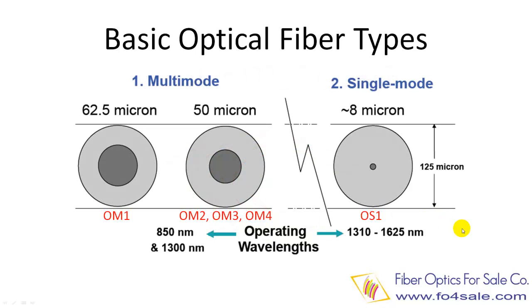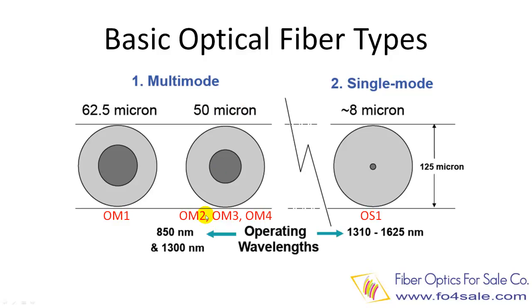Before we jump into OM4 fiber directly, let's take a quick overview of the basic fiber types. Optical fiber can be divided into two groups: multimode fiber and single-mode fiber. There are two sizes of multimode fiber — multimode fiber with a 62.5 micrometer diameter core and multimode fibers with a 50 micrometer core. The 62.5 micron fiber is called OM1 fiber. In the 50-micron group, there are currently three types: OM2, OM3, and OM4 fiber.